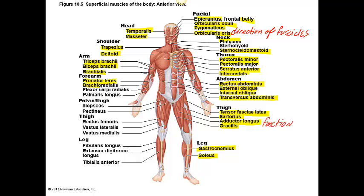A lot of these muscles are named for where they are located or their function. You do not need to know the iliopsoas or the pectineus muscle, but in the thigh you do need to know the quadriceps group. There are four different muscles that make the quadriceps, but you can't see one of them because it is directly deep to the rectus femoris muscle. You do need to know the fibularis longus as well as the tibialis anterior.